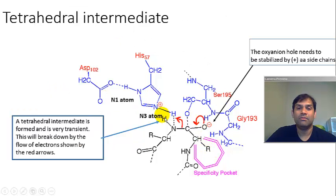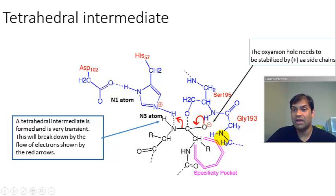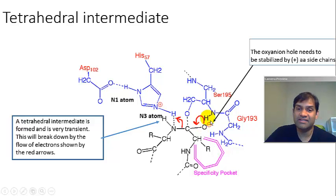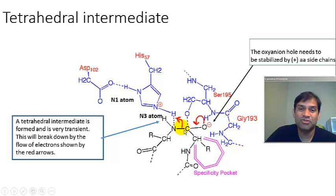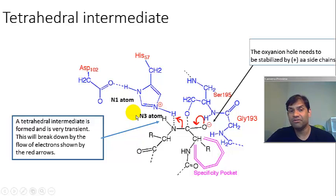Once you have that nucleophilic attack, you have what is called a tetrahedral intermediate. This tetrahedral intermediate is very unstable and has a very transient half-life. The oxyanion hole is stabilized by several amino acids that are small, like glycine, or have a positively charged side chain, because the negative charge on the oxygen needs stabilization. The tetrahedral intermediate collapses when the pair of electrons on the oxygen atom goes back to form the C=O double bond, and the pair of electrons goes back to the nitrogen. The N-terminus actually leaves, and we are finished with the first half of this mechanism.